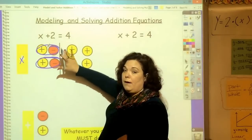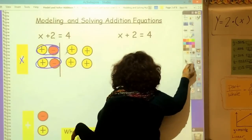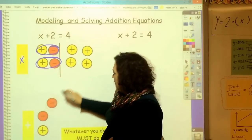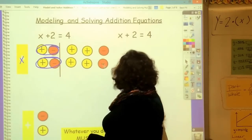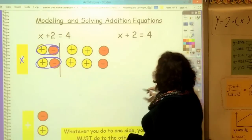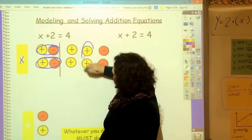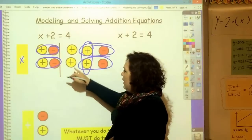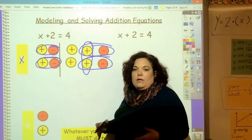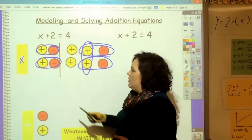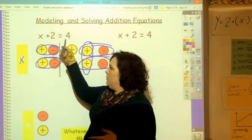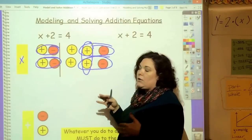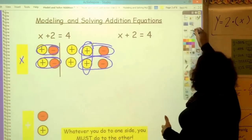To keep this balanced, what you do to one side, you must do to the other. I added two negative here, so I'm going to add two negative here. My integer operation says that this zeros out, and this zeros out. And so, I have x equals 2. Visually, you just know that because you know that 2 plus 2 equals 4, and you can check that. But this is how it works, and you have to be able to do it pictorially.